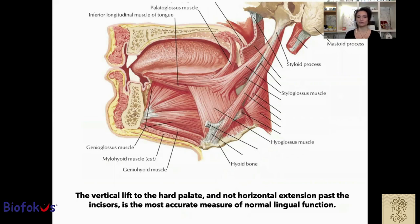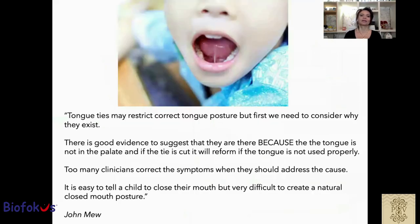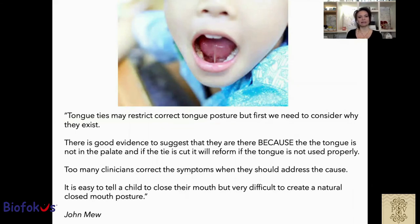The vertical lift to the third and posterior hard palate — and not horizontal extension past the incisors — is the most accurate measurement of normal lingual function. Tongue tie may restrict correct tongue posture, but first we need to consider why they exist. There is good evidence to suggest that tongue ties are present because the tongue is not in the palate, and if the tie is cut, it will reform if the tongue is not used properly. Too many clinicians correct the symptoms when they should address the cause. It is easy to tell a child to close their mouth, but very difficult to create a natural closed mouth posture — as Professor John Mew has stated, and it is very, very true.